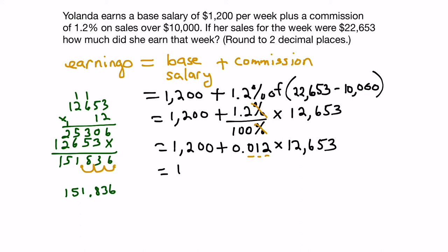So we'll put that into our equation here, plus 151.836. Now all we have to do is add these two numbers together. So we'll go over to the side and put in our 1,200 number here in the proper places, add up these columns, 6, 3, 8, decimal, 1, 5, 3, 1.